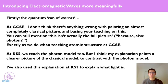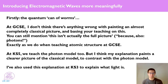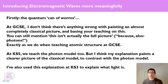Just a quick thought on that quantum can of worms — I don't think there's anything wrong at GCSE with painting an almost completely classical picture. You can always mention this isn't the full picture and mention photons by all means. This is exactly what we do with atomic structure in chemistry: we teach a classical picture of protons, neutrons, and orbiting electrons, even though they don't orbit in any sense of the word. I think we can do the same in the electromagnetic waves topic. At key stage five we teach the photon model as well, and this classical explanation paints a clearer picture to then contrast with the photon model.